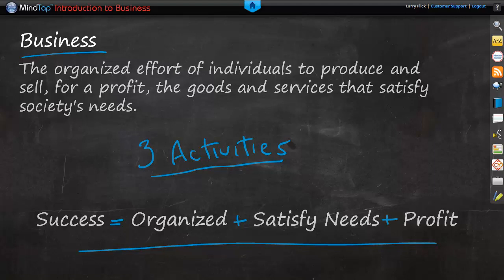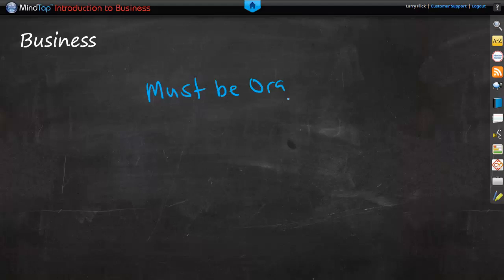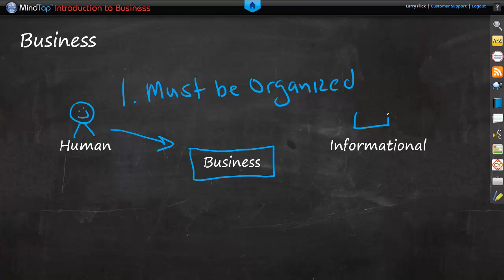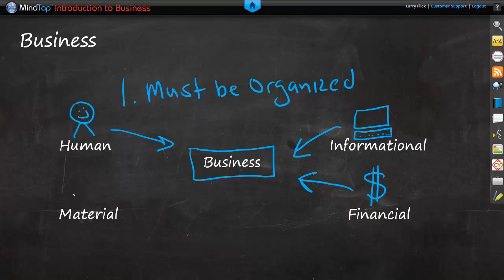Let's take a closer look at each activity. Number one, it must be organized. Businesses generally combine four basic resources. They combine human resources, financial resources, and material resources in an efficient and effective manner to accomplish business goals.